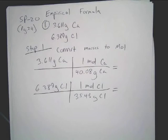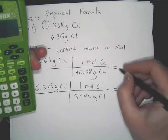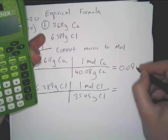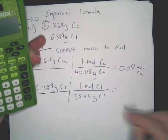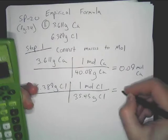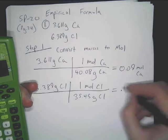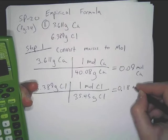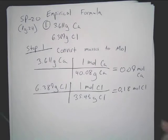I think I remember them, but I don't... I'm not sure if I remember them that well. Never mind. I got it. So we have 0.09 moles of calcium, and you have 6.389 divided by 35.45. That provides 0.18 moles of chlorine.